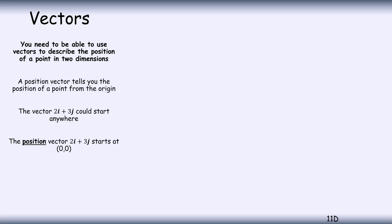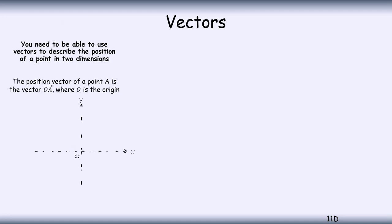But once we call for a position vector 2i plus 3j, it has to start at the origin. So that's our definition there: position vector, it's got to start at the origin.